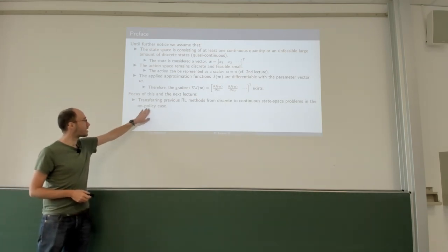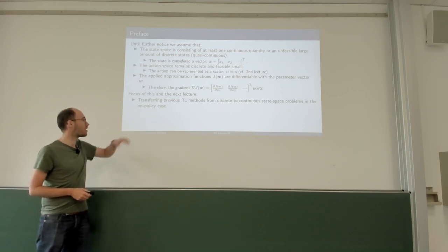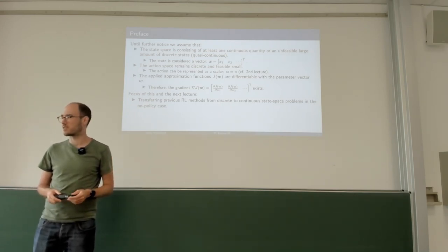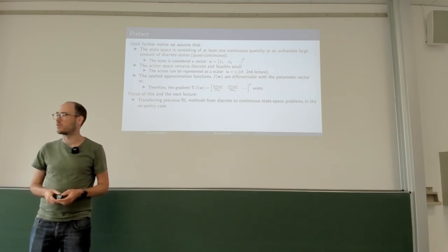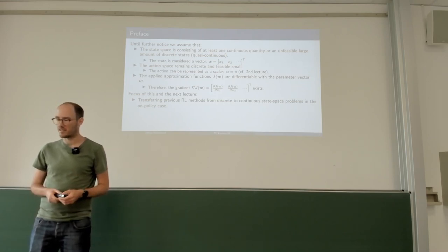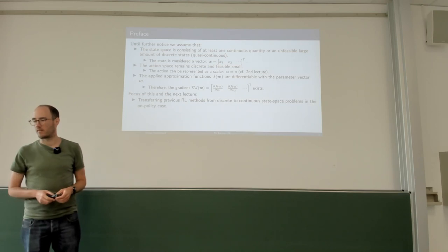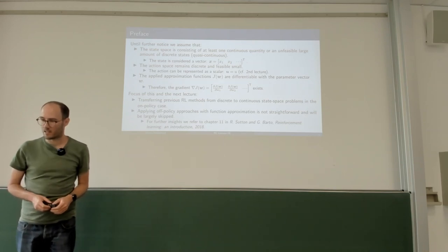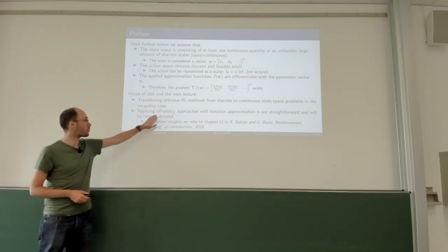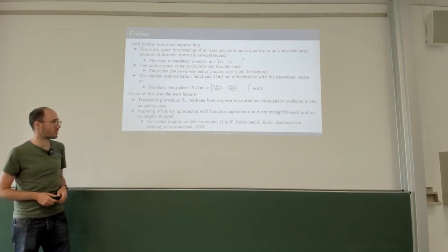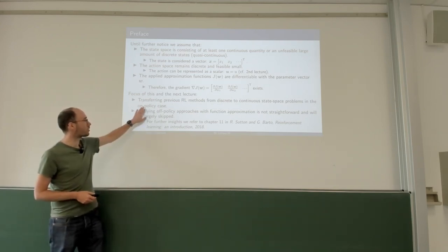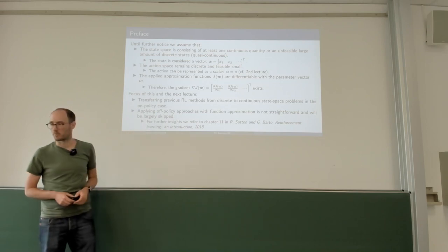The focus of this and the next lecture is to transfer everything from the first seven lectures on discrete state and action spaces — from tabular reinforcement learning to deep reinforcement learning using continuous state spaces and later also action spaces. We do this today at least for on-policy methods, because this allows us to transfer Monte Carlo and temporal difference learning very easily, one-to-one. If we were to do this off-policy, some things would become more complex. For those interested in off-policy approaches, we refer to Sutton and Barto, Chapter 11, though that would not be relevant for examination.